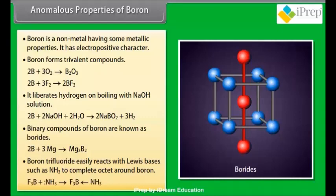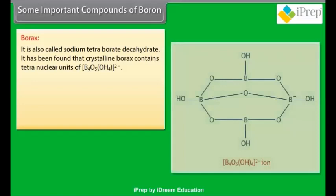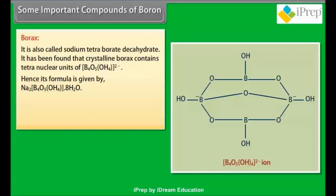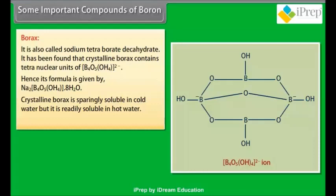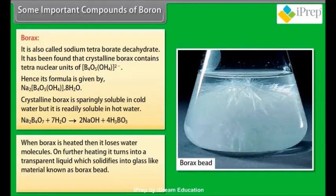Some important compounds of boron. Borax: it is also called sodium tetraborate decahydrate. It has been found that crystalline borax contains tetranuclear units of B4O5(OH)4 with a 2- charge. Hence its formula is given by Na2B4O5(OH)4·8H2O. Crystalline borax is sparingly soluble in cold water but it is readily soluble in hot water. When borax is heated, then it loses water molecules. On further heating, it turns into a transparent liquid which solidifies into glass-like material known as borax bead.